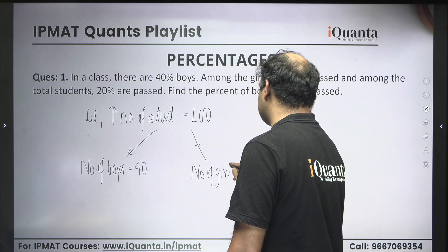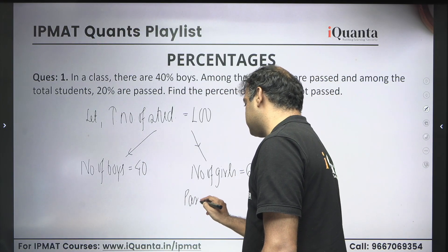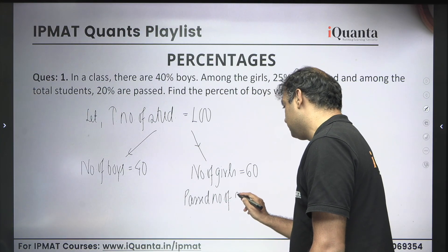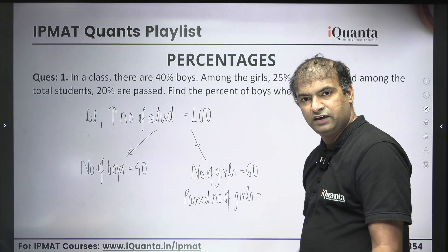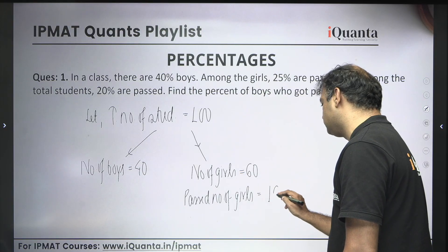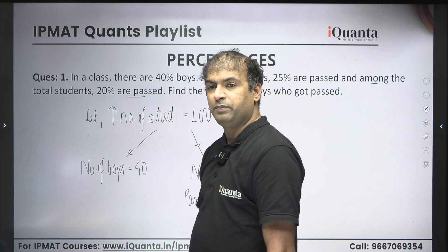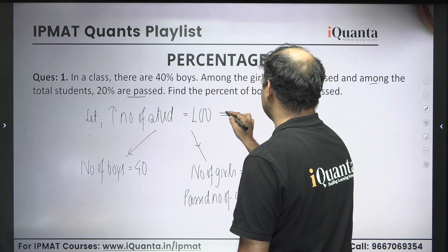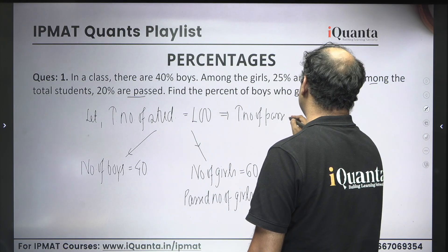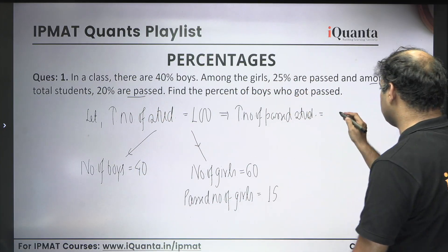Now, among these girls, 25% have got passed. So the passed number of girls should be 25% of 60, which is 15 — because 25% is one-fourth and one-fourth of 60 is 15. They are also saying that among total students, 20% have got passed. Total students we assumed as 100, so the total number of passed students should be 20% of 100, which is 20.